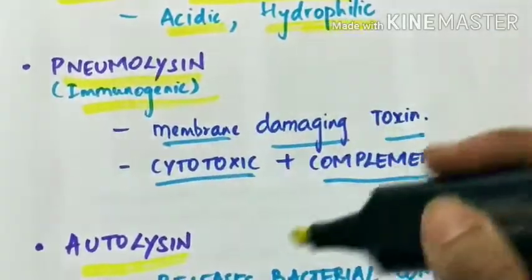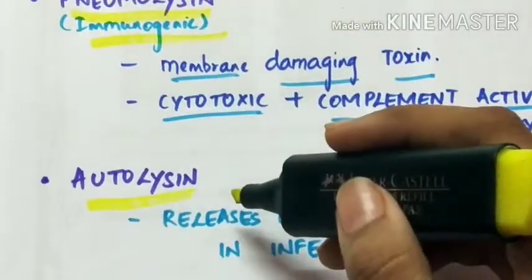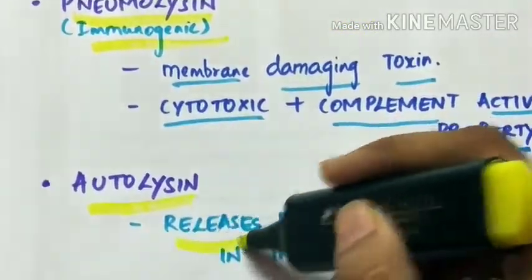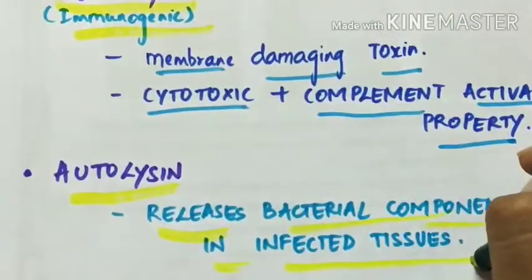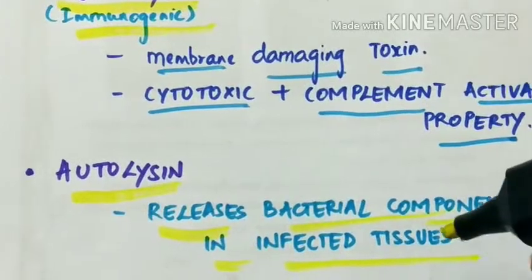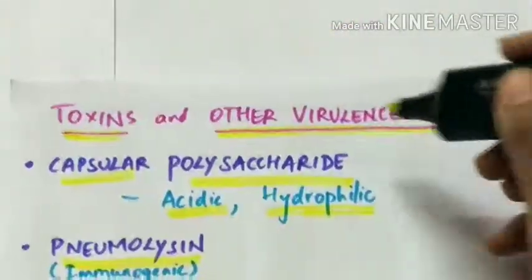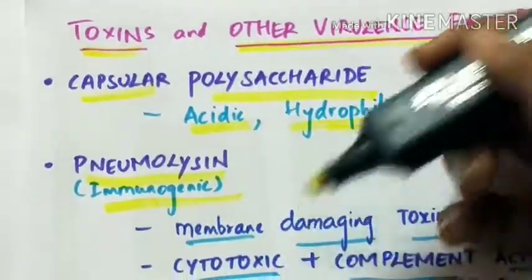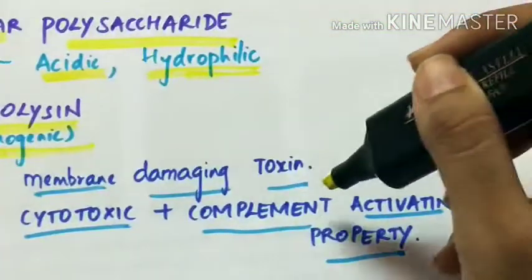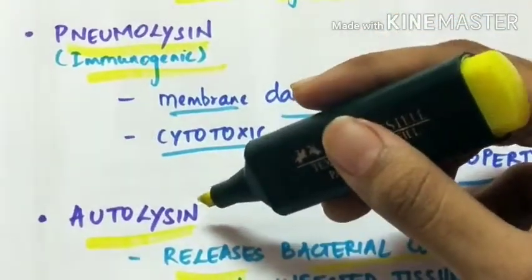Autolysin. This is virulent by releasing the bacterial components in the infected tissues. So other virulence factors include capsular polysaccharide, pneumolysin which is both cytotoxic and also activates complement property, and autolysin.